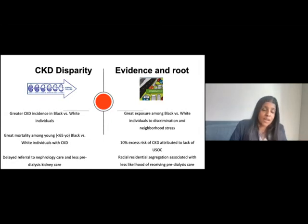Work that came out this last year shows still persistent delays in referral to nephrology care and less predialysis kidney care among all racial and ethnic minority groups in the United States. Studies demonstrate that racial residential segregation has been associated with less likelihood of receiving predialysis care. Where you live really matters.